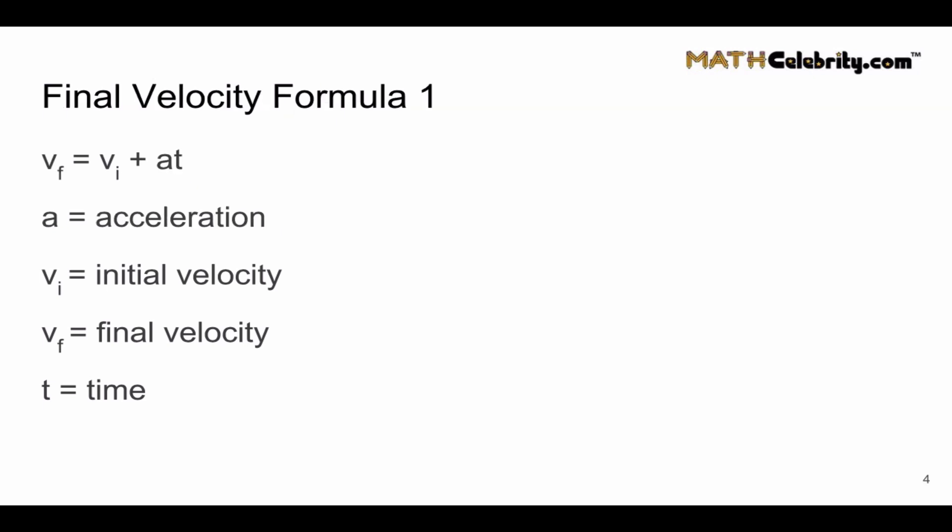Let's look at kinematic equation number three or final velocity formula one. v sub f equals v sub i plus a times t. Again a is acceleration, v sub i is initial velocity, v sub f final velocity, and t equals time.